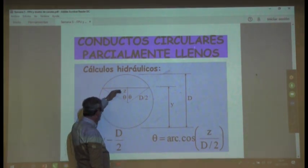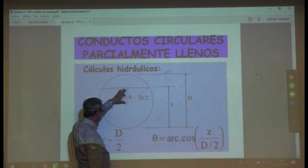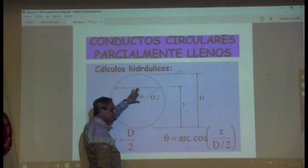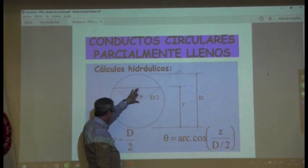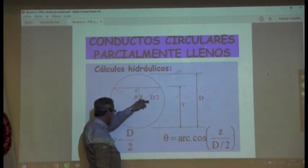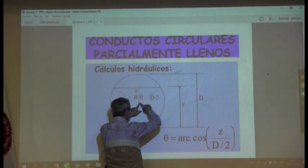Si este es el centro, acá podríamos ubicar la superficie libre y a esta distancia la llamamos zeta. Si esto es zeta, y este es el radio, o sea, este es el radio del círculo que lo podemos llamar también de medios.